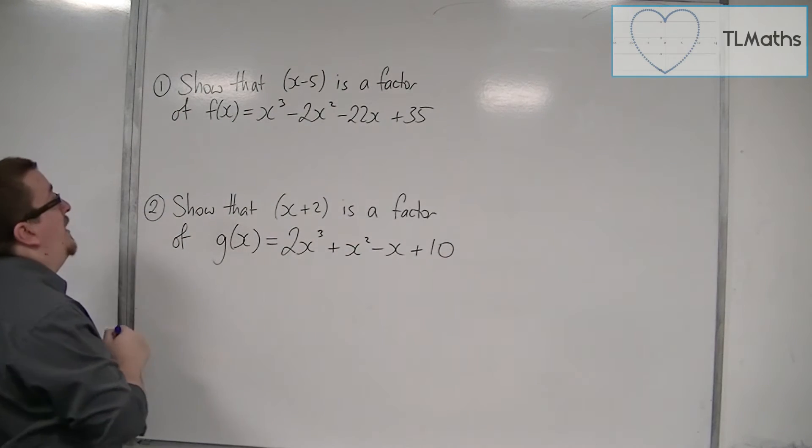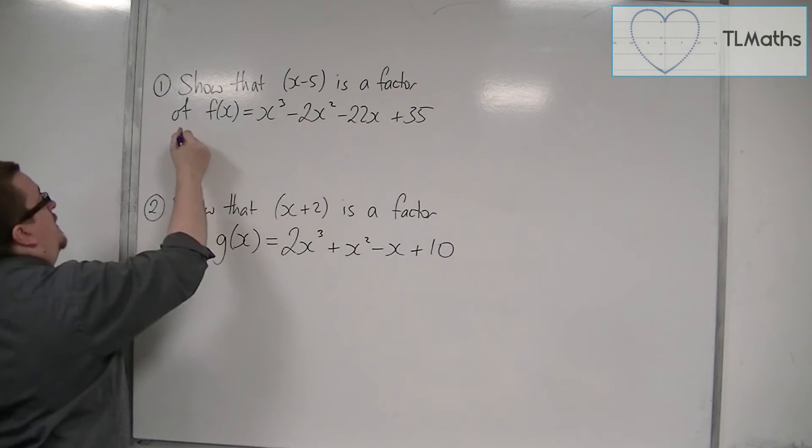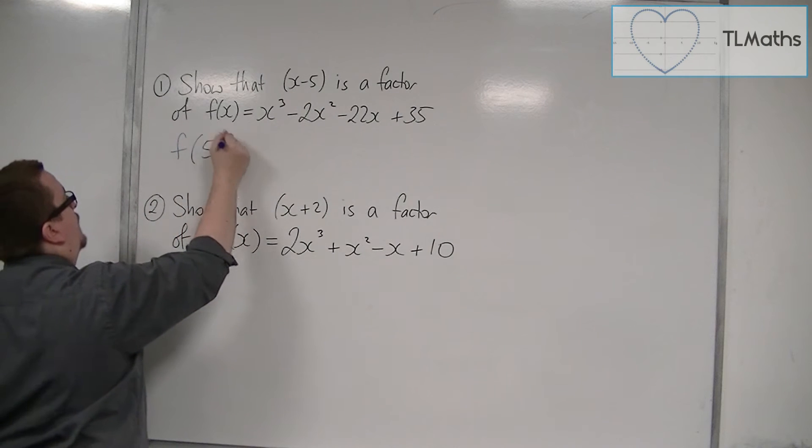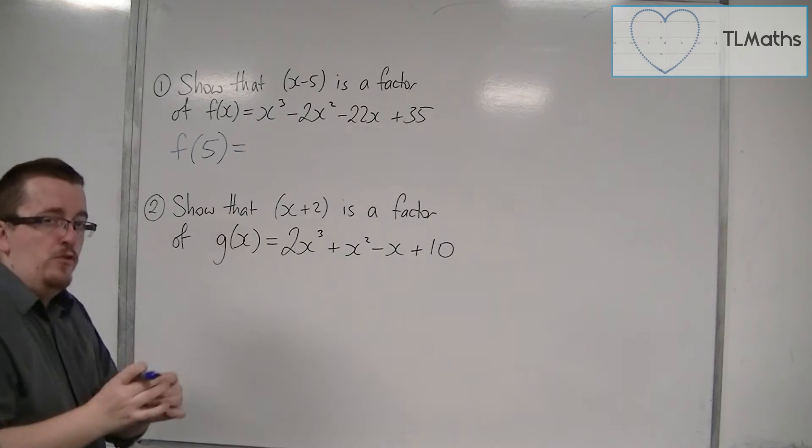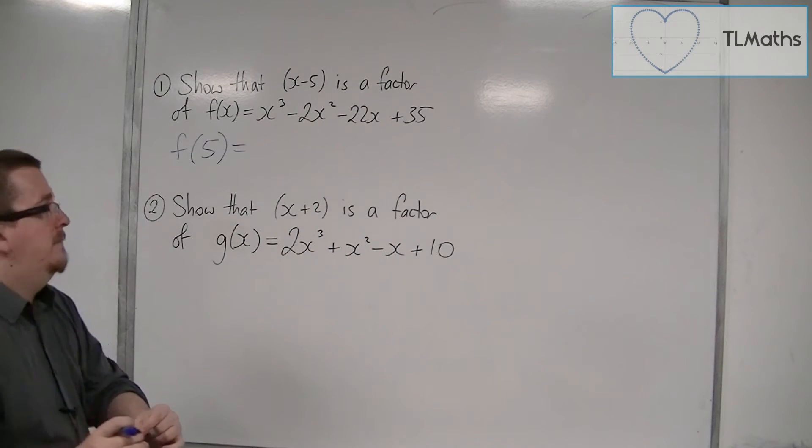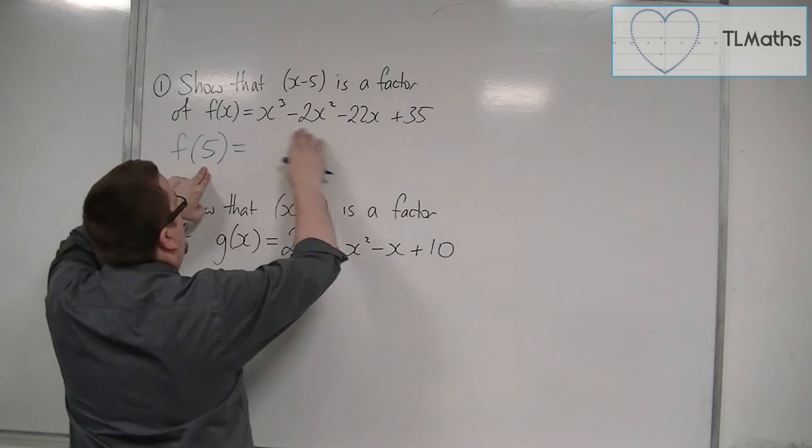Show that x minus 5 is a factor of f(x). The factor theorem says that if x minus 5 is a factor, then f(5) should be equal to 0, and we just need to show that. So we substitute 5 into this.